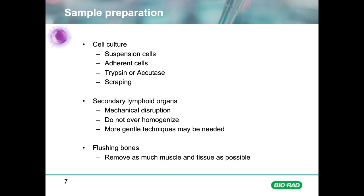If you are looking at secondary lymphoid tissue such as thymus, spleen, or lymph nodes, you will have to mechanically disaggregate the tissue. Care must be taken, as being too aggressive will lead to many dead cells, whilst being too gentle may lead to ineffective cell recovery. More gentle techniques can be used, such as flushing out cells using a needle and syringe, but cell recovery may be reduced. After harvesting, the cells are washed and resuspended at the right concentration prior to staining.